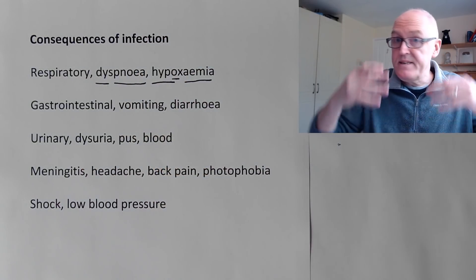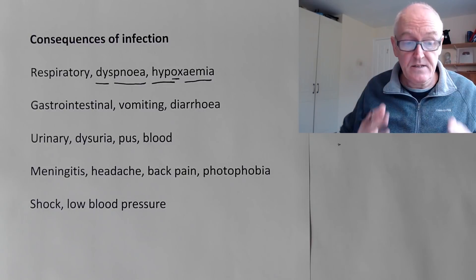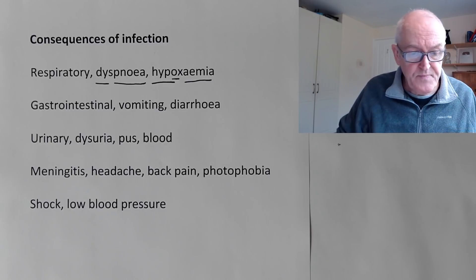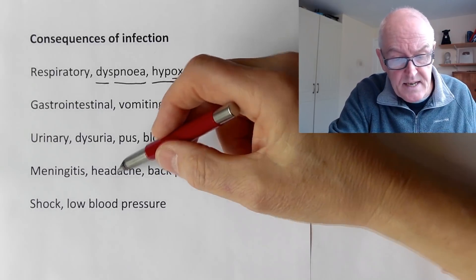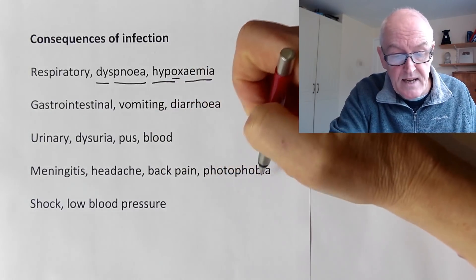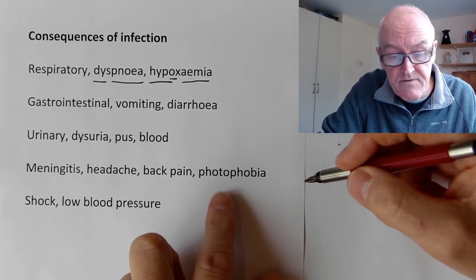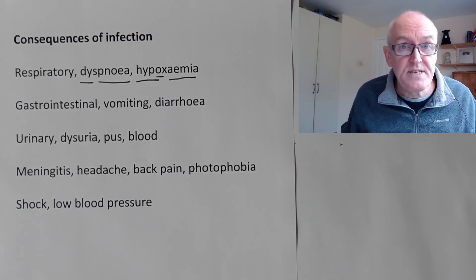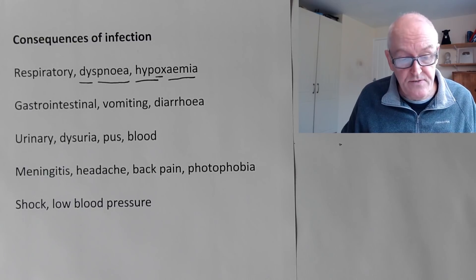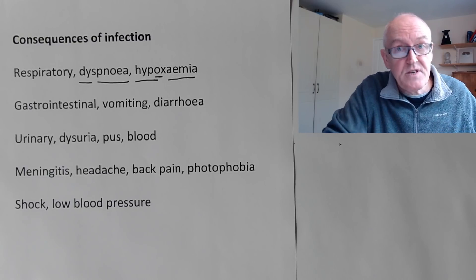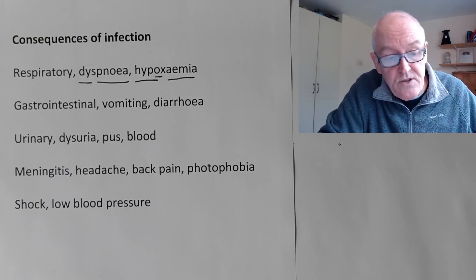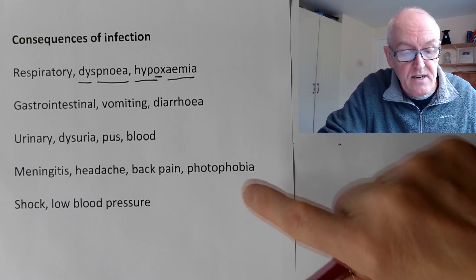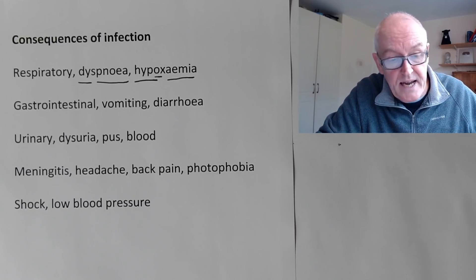You can get an infection of the meninges, which is the covering of the brain and the spinal cord - meningitis. That can be very, very serious. With that, you might get a headache, back pain, and photophobia - fear of the light, you don't like the light. There are other features depending on the particular type of meningitis. For example, with meningococcal meningitis, you can develop a rash, but it's important to remember that the rash is a later feature - we need to try and recognize these things early.